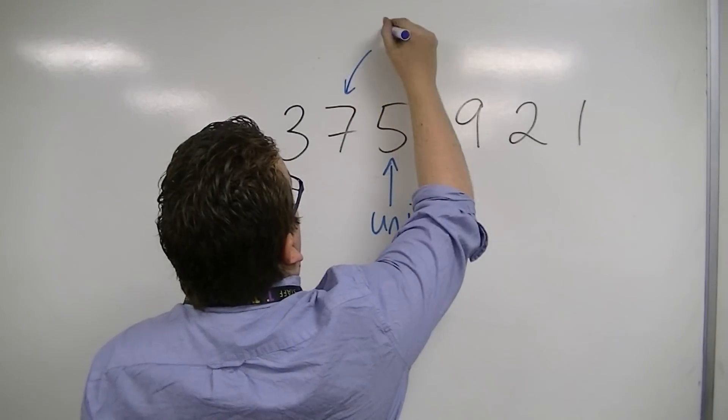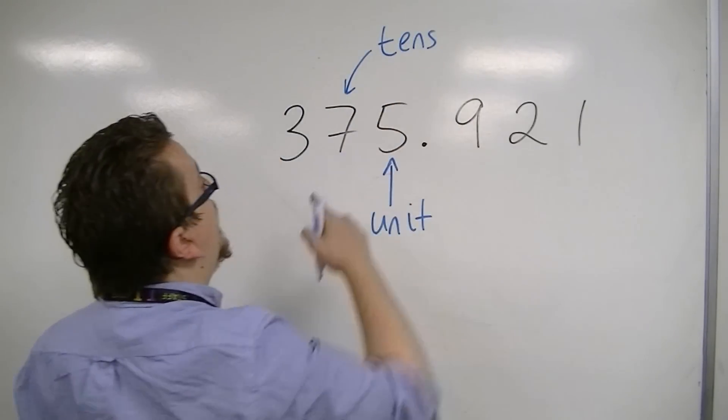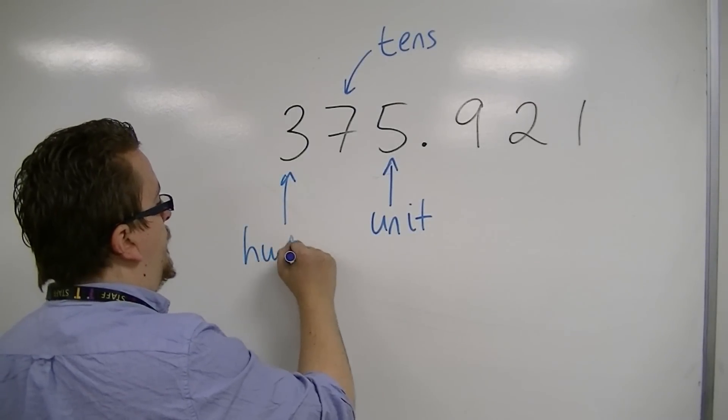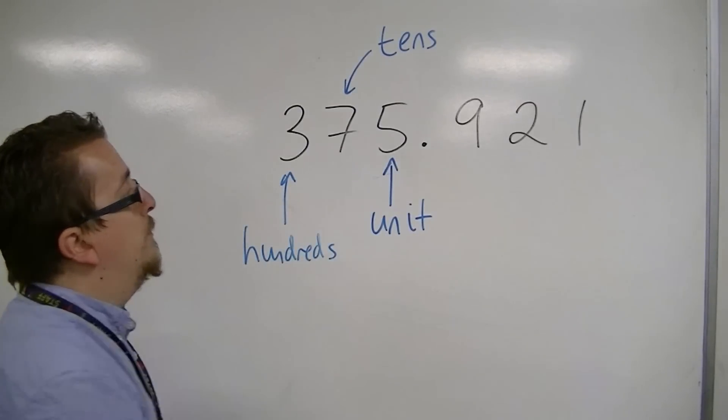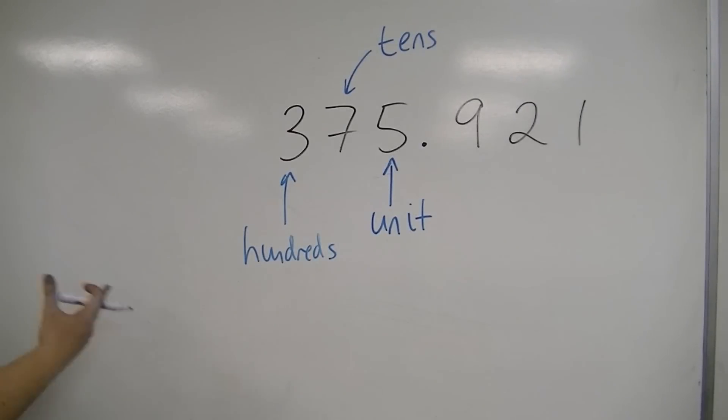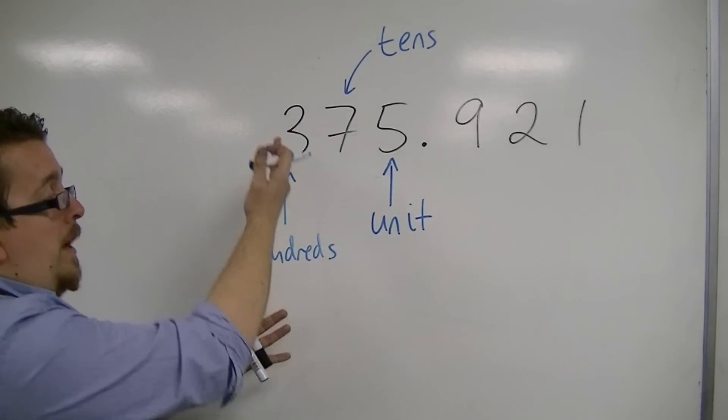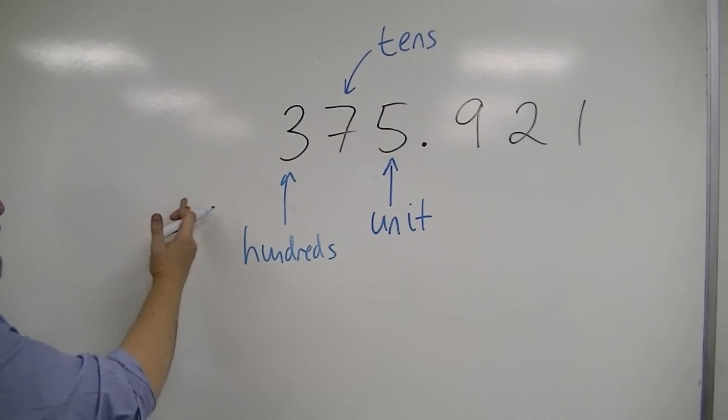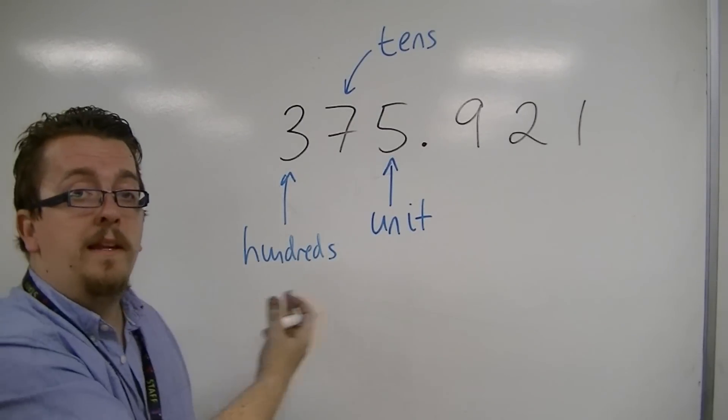Then we have tens, so we have 7 tens, and 3 hundreds. If we kept going, then you would have thousands, tens of thousands, hundreds of thousands, millions, tens of millions, etc.